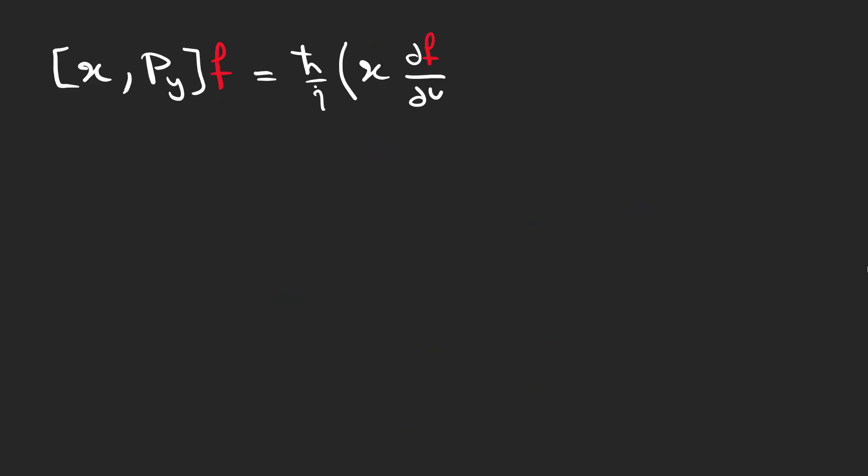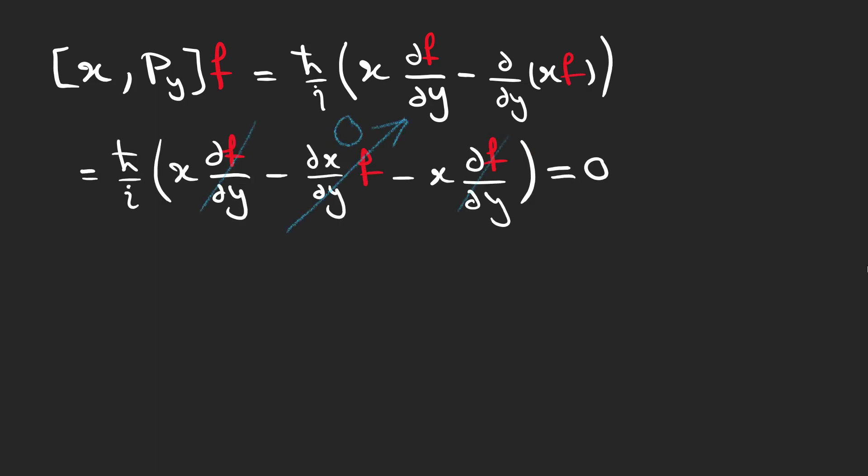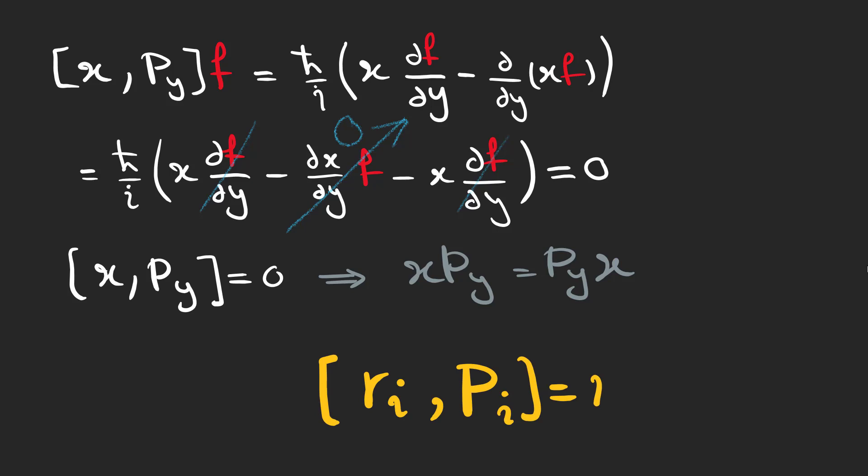Let's check the commutator for x and py. As you can see, the result is 0, and we can safely use xpy and pyx interchangeably. And this is the compact form of writing all that is said using the well-known Kronecker delta function.